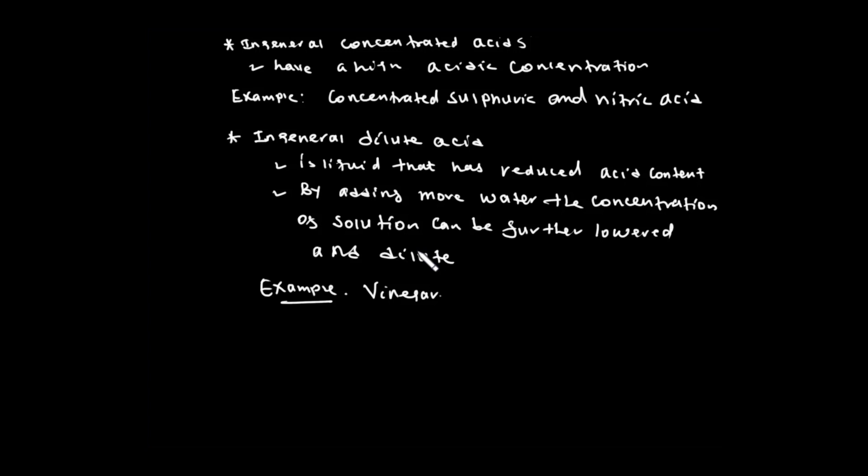In summary, the strength of an acid refers to whether it is a strong acid or weak acid. Strong acid is completely dissociated in solution, while weak acid is only partially dissociated. Concentrated acid and dilute acid depend on the number of moles of solute present in the solution.